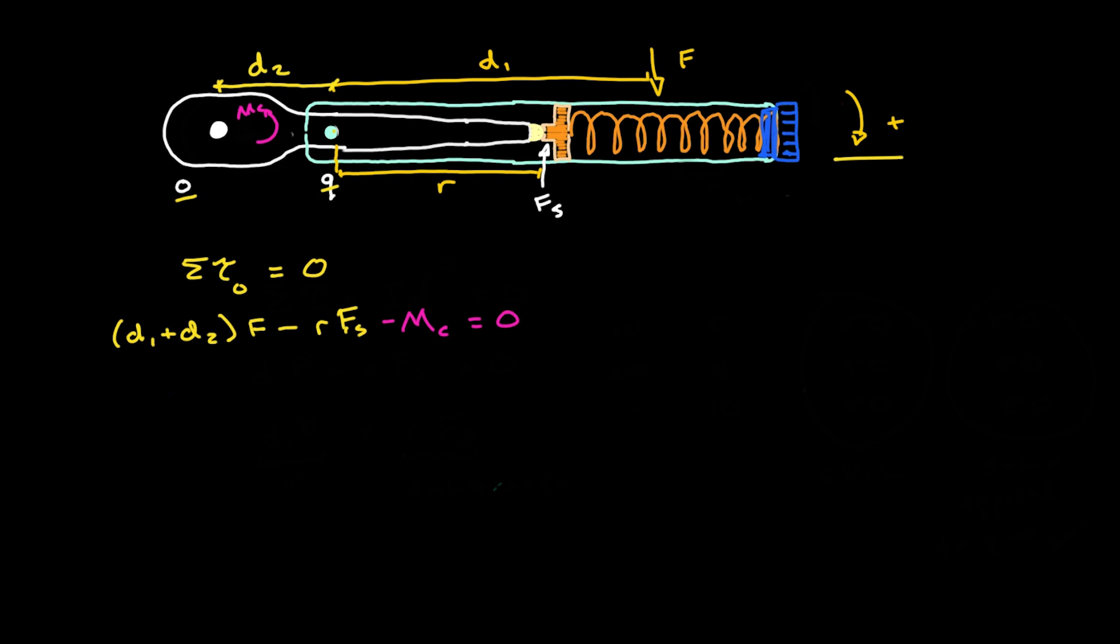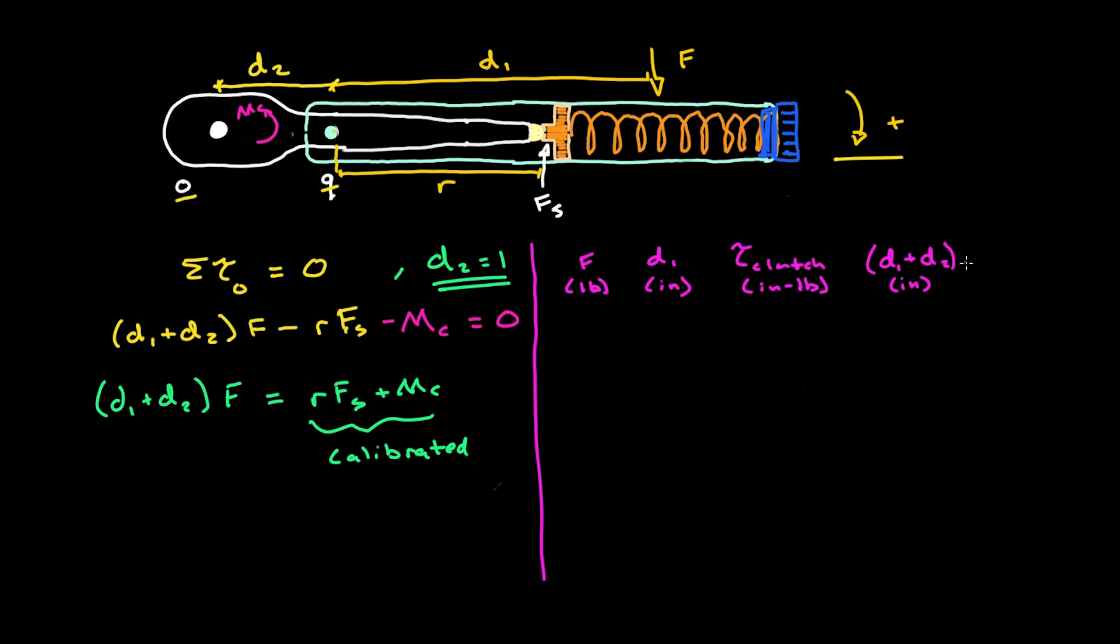So now, let's suppose that the offset distance between the socket head and the handle pivot point is D2 equals one inch. And also, suppose we apply a perpendicular force of 10 pounds at a distance, D1, of five inches. The torque that the clutch experience is actually just D1 times F or 50 inch pounds as in the previous fictitious scenario, while the applied torque at the bolt is now the moment arm D1 plus D2 times F or 60 inch pounds. This discrepancy itself isn't a problem. In fact, the tool manufacturers calibrate this discrepancy so that when you do apply the force at, say, D1 equals five inches, you actually get the proper applied torque denoted on the dial.